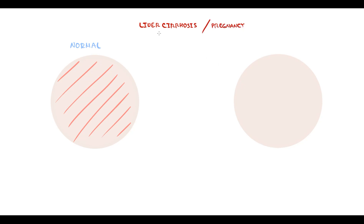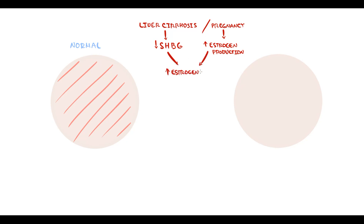In liver cirrhosis, the concentration of sex hormone binding globulin decreases. In pregnancy, estrogen production increases. Both these events cause an increasing amount of free estrogens in the blood, and free estrogens stimulate vascularity and also induce vasodilation of the blood vessels.